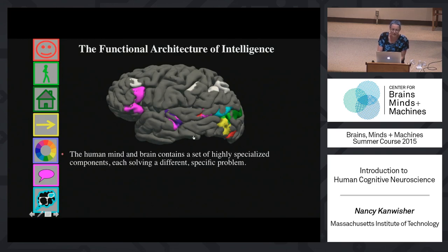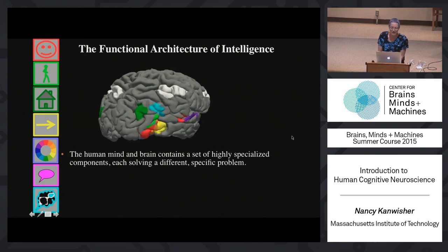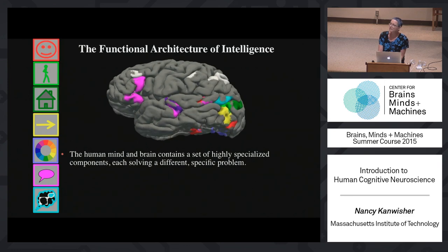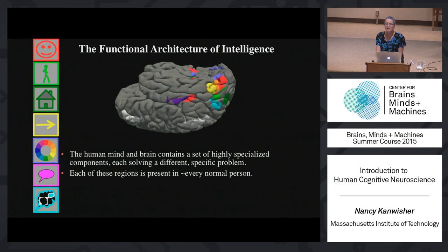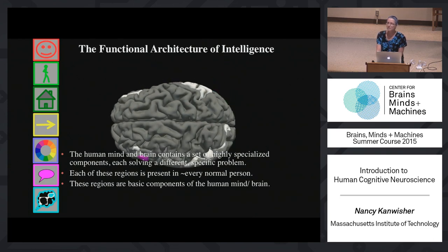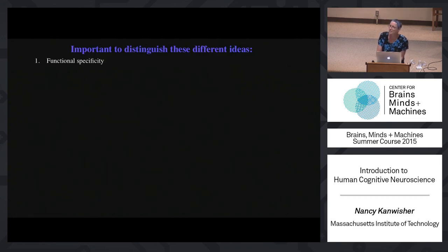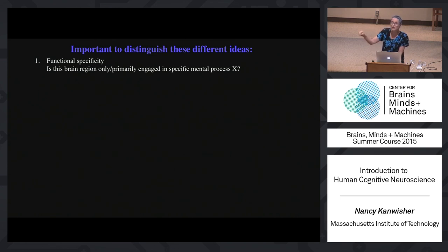The argument I'm making is that the human mind and brain contains a set of highly specialized components, each solving a different specific problem, and that each of these regions is present in essentially every normal person — it's just part of the basic architecture of the human mind and brain. This view is often confused with other things. I'm talking about functional specificity — whether a particular region is engaged pretty selectively in just one particular mental process and not lots of others. That's a different idea than anatomical specificity, which would say it is only this region that's involved and nothing else. That's a different question.